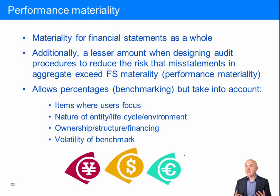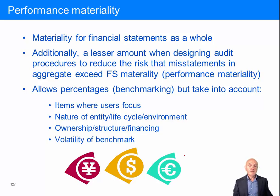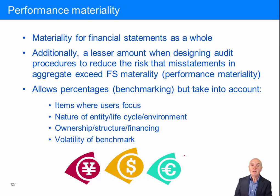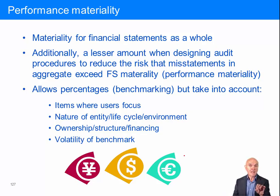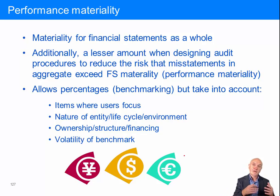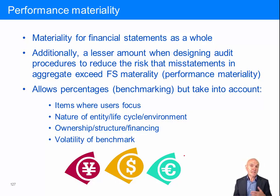You're allowed different percentages to take into account. You wouldn't allow very much error at all in something like directors' emoluments, and no reason why cash at the bank shouldn't be accurate to the last cent. You might however be more forgiving about inventory or depreciation — depreciation of non-current assets is always a bit of an estimate anyway, so there's no point getting too worked up about that, as long as it's consistent with last year.